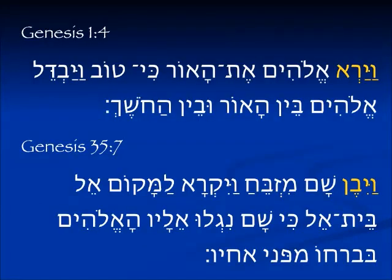For example in Genesis 1:4, vayar elohim et ha'or — and God saw the light. Normally 'he will see' would be yireh, with a He at the end. But in these circumstances, verbs ending in He with the reversing vav in front drop the He. So instead of vayir'eh we see vayar. This is strictly biblical language; it's not in the spoken language.